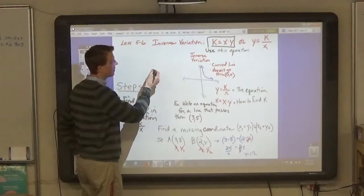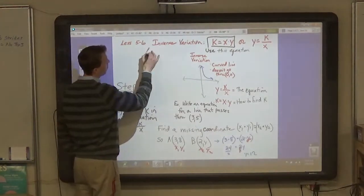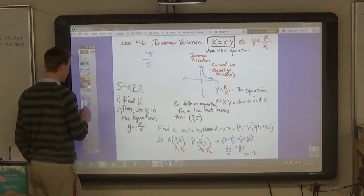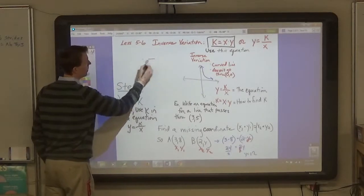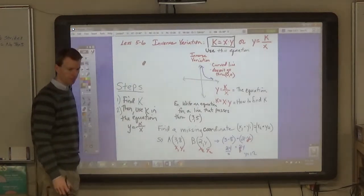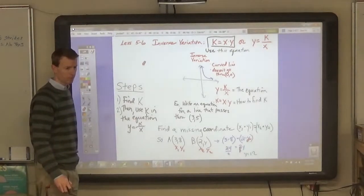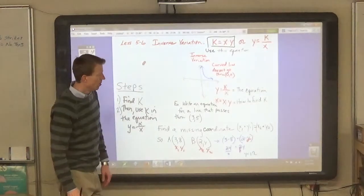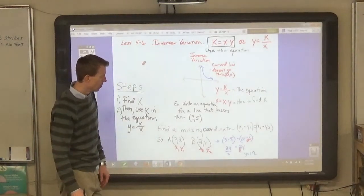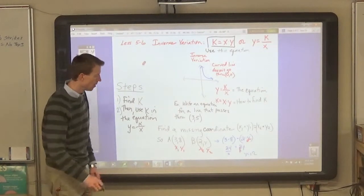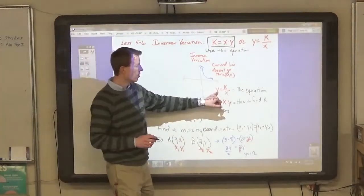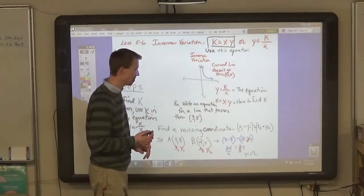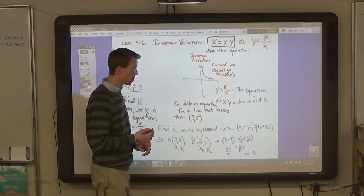For the same reason that 5 divided by 15 isn't the same as 15 divided by 5. So if x is 3 and y is 5, K is always x times y, whether it's written down or not. That would be 15. So 15 divided by 5 would be 3, which is x.